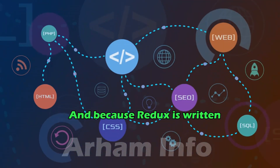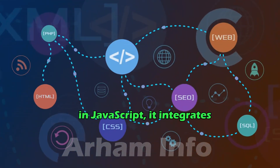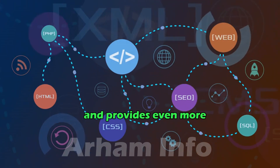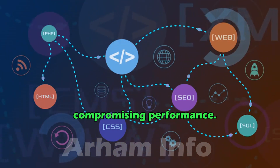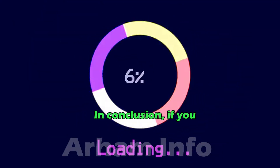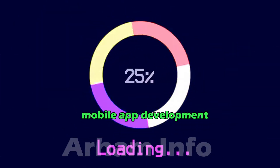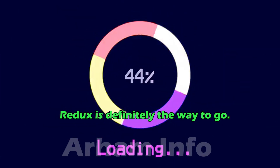And because Redux is written in JavaScript, it integrates seamlessly with React Native and provides even more benefits without compromising performance. In conclusion, if you prioritize speed in your mobile app development project, React Native with Redux is definitely the way to go.